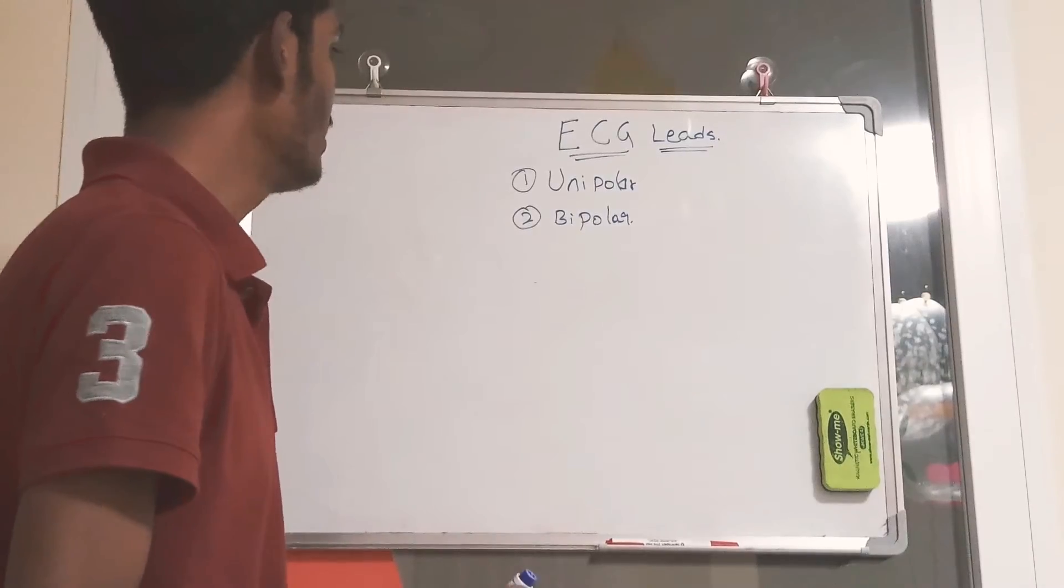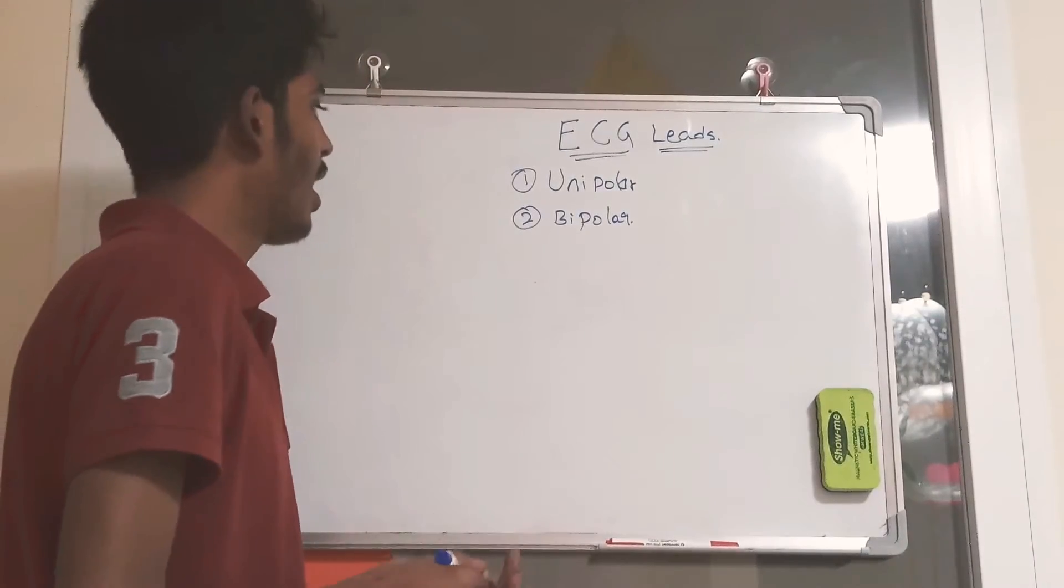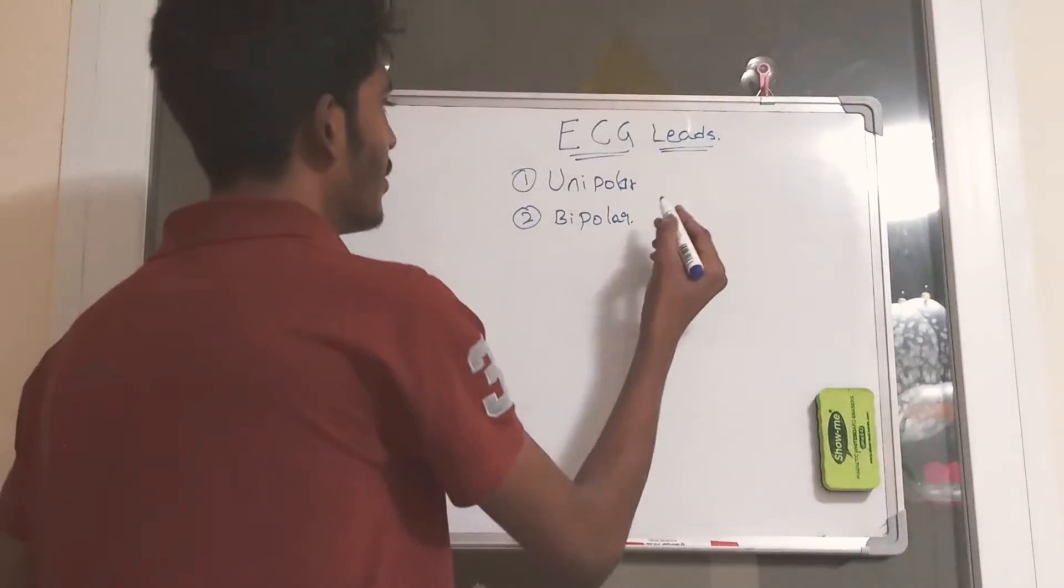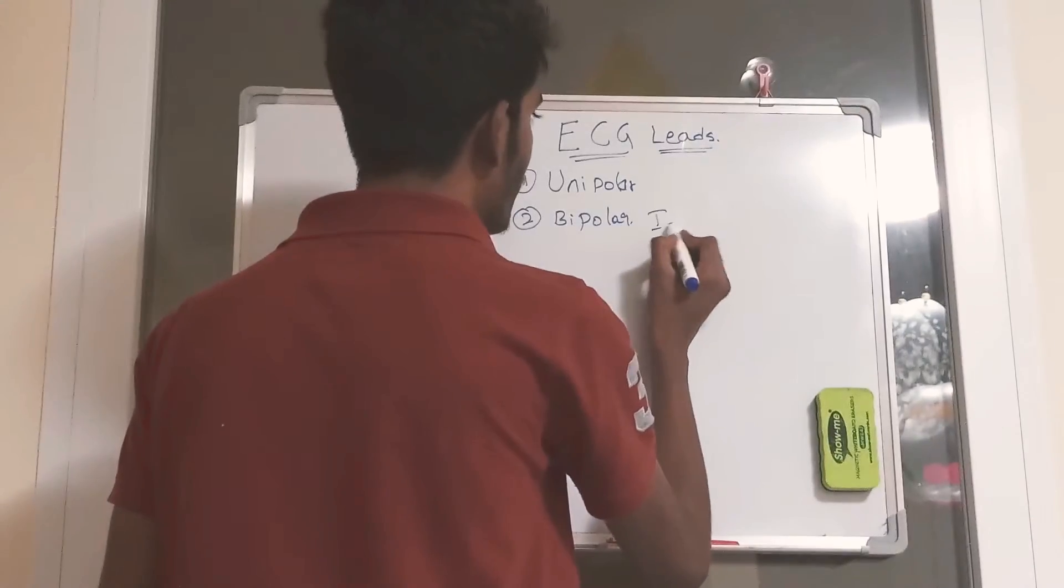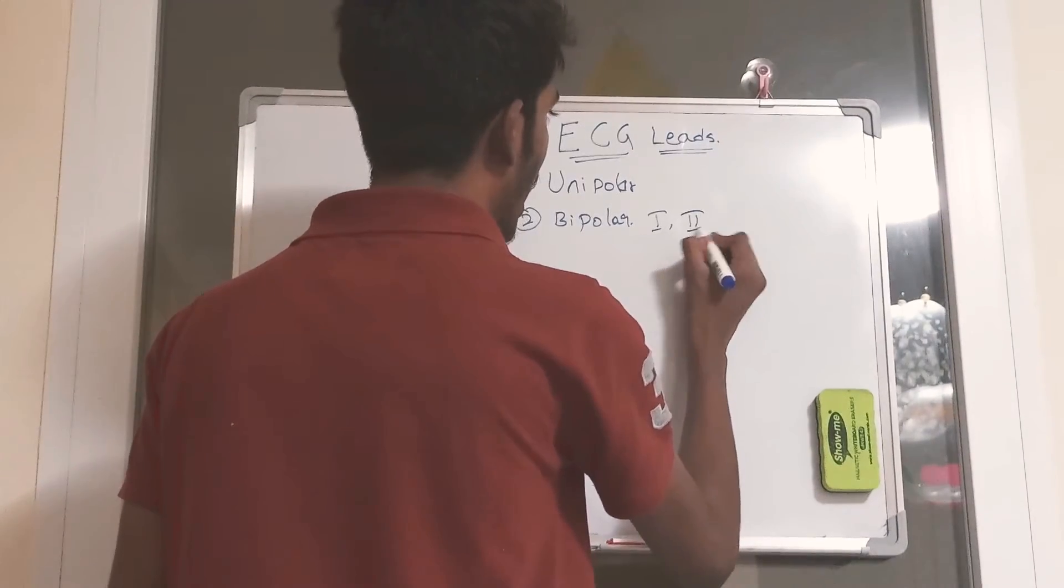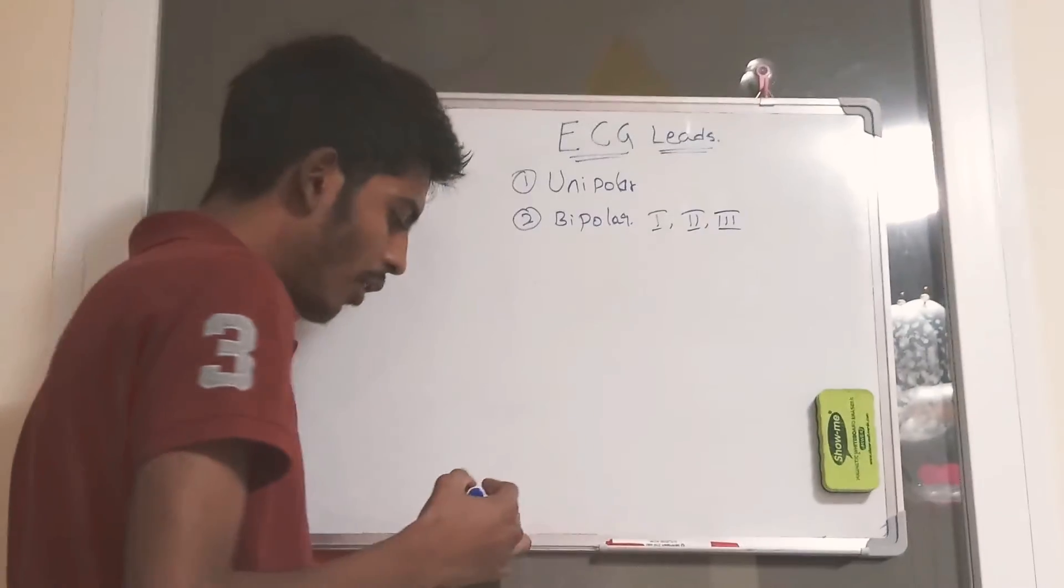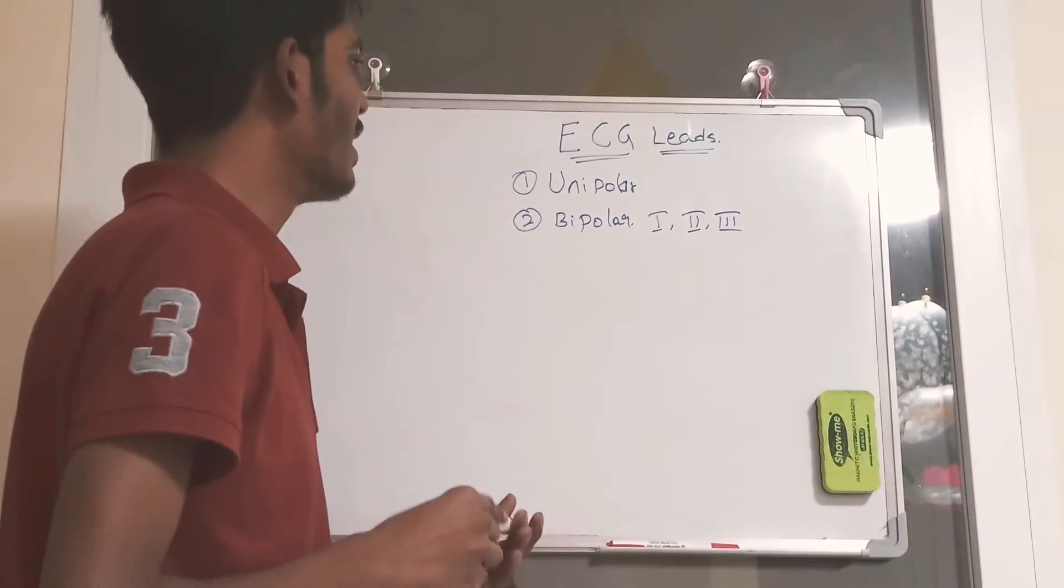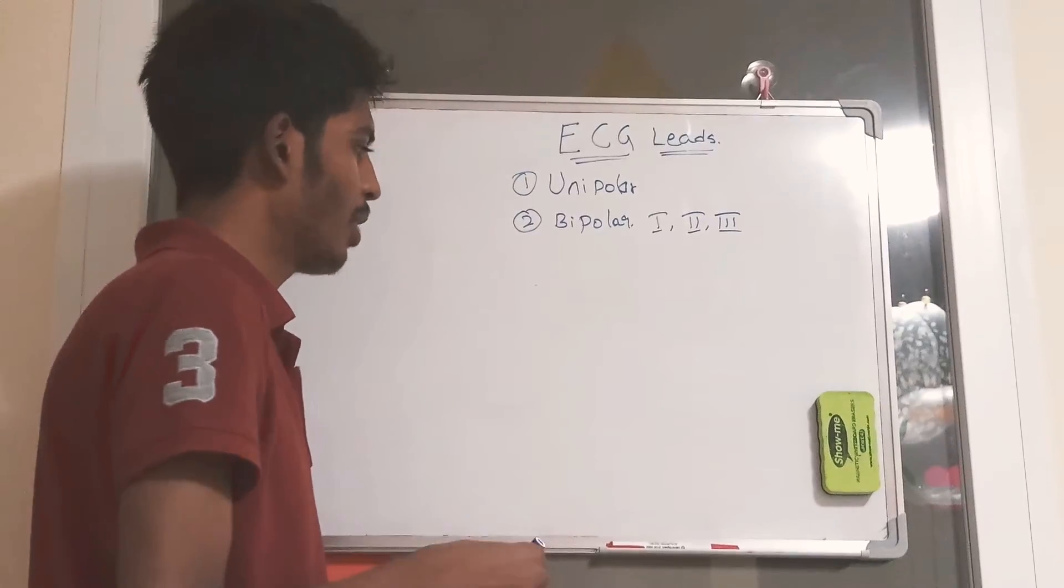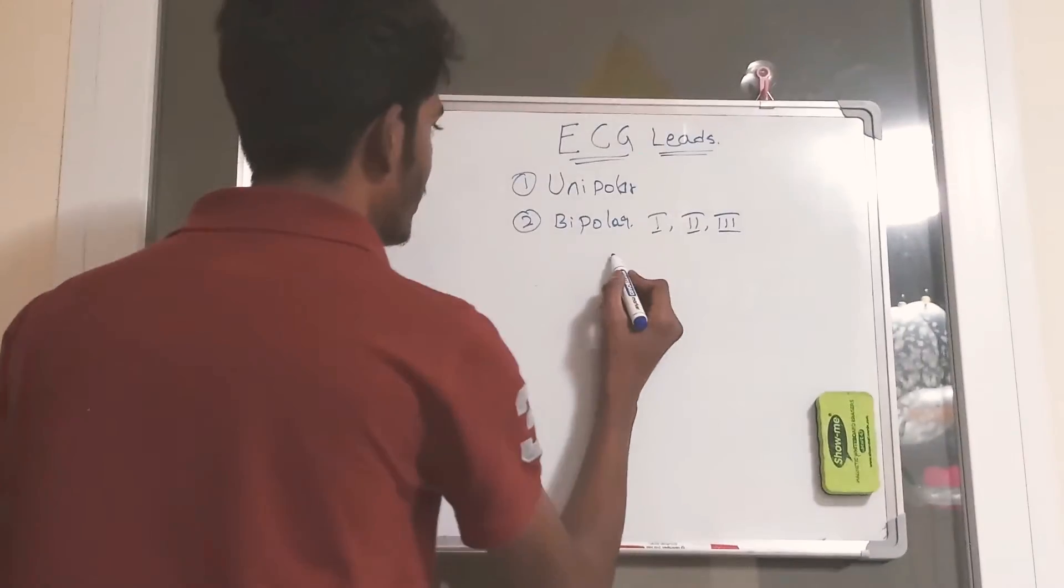First we'll start with bipolar leads. These bipolar leads are the limb leads, which includes lead 1, lead 2, and lead 3. How do we obtain these three leads on a human body? I'm going to explain that now.